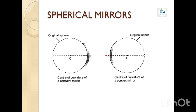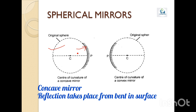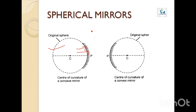A concave mirror is that spherical mirror in which the reflection of light takes place at the concave surface, or bent-in surface. When we cut a concave mirror from a hollow sphere, the back portion is silver-coated or protected by paint, and the inner surface is your reflecting surface. So in a concave mirror, the bent-in surface is your reflecting surface.